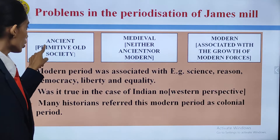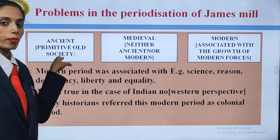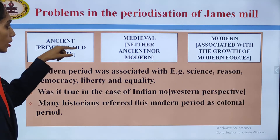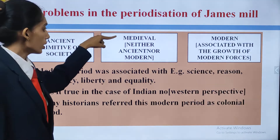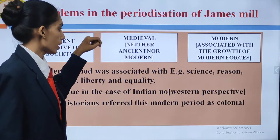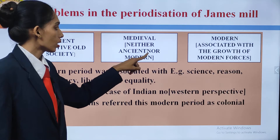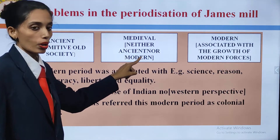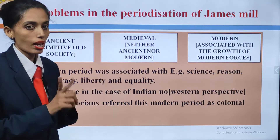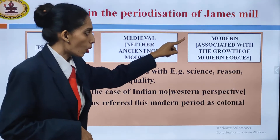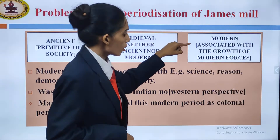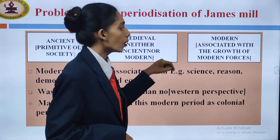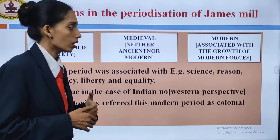Ancient is associated with primitive and old society. Medieval is associated with neither ancient nor modern — it is a transition period. Modern is associated with the growth of modern forces.